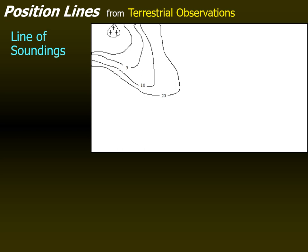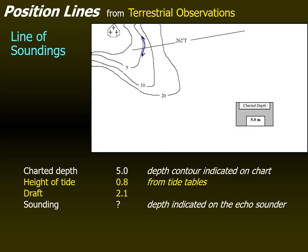Now let's talk about the line of soundings. Depth contours on charts are lines drawn joining places of equal depth — for example, the 5, 10, and 20 meter contours. Navigators should be wary about using depth contours as a means of position determination, as they are not intended for use as position lines. However, soundings give useful indications of the general position of the vessel near the coast, especially when charted coastal features are scarce. The depth on the chart is the charted depth at chart datum, while the depth on the echo sounder is the distance between the transducer and the sea bottom — so it must be corrected for the depth of the transducer and the height of tide to obtain the charted depth.